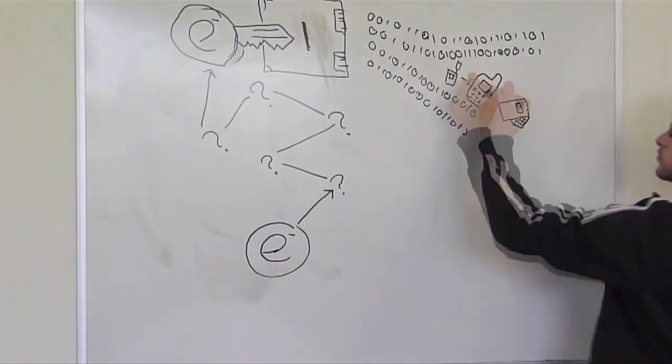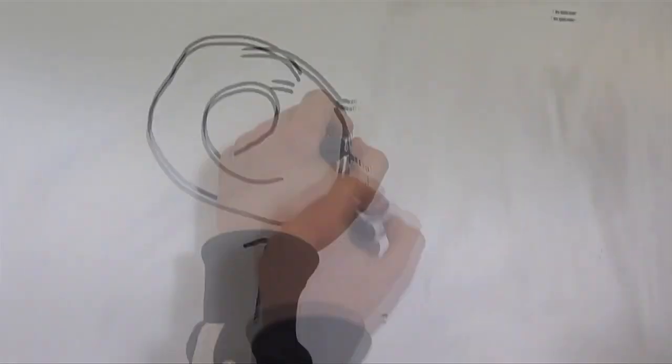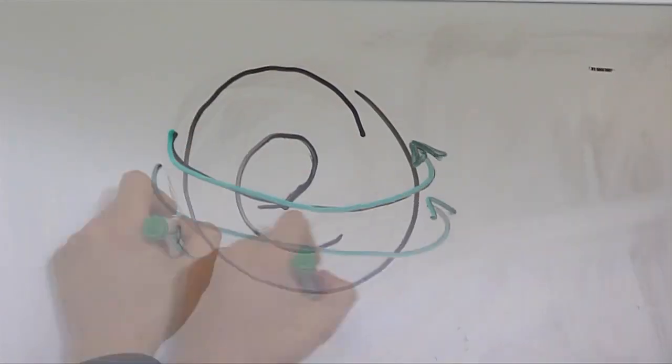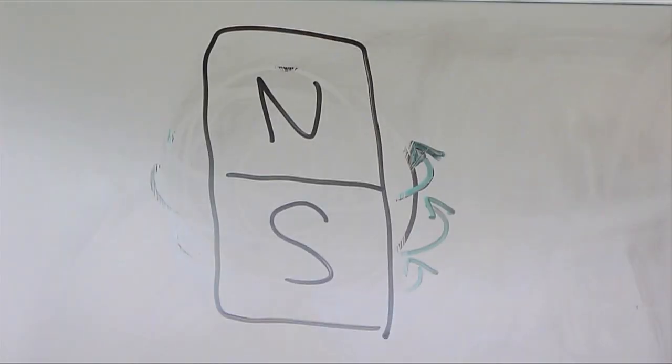Electrons and other elementary particles possess a property called spin. Spin is responsible for the magnetic moment of an electron. Spin can be thought of as associated with angular momentum, which involves spinning. In that sense, it's like an electron having some sort of internal spinning.